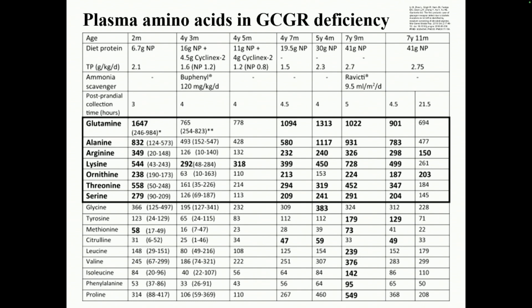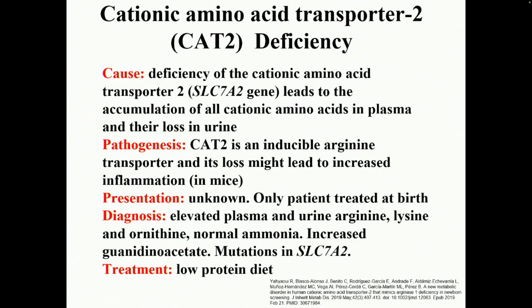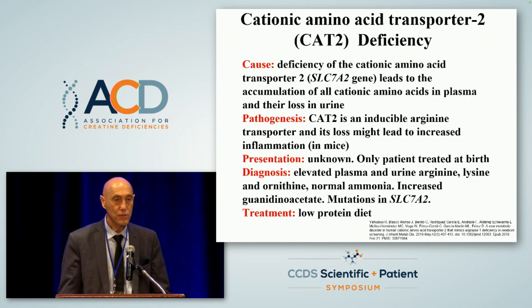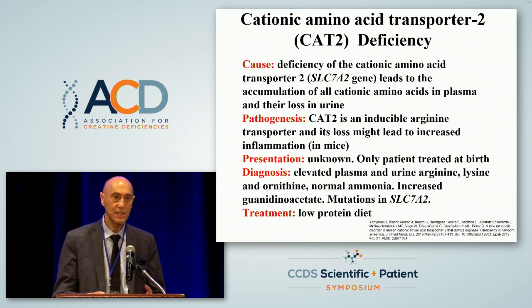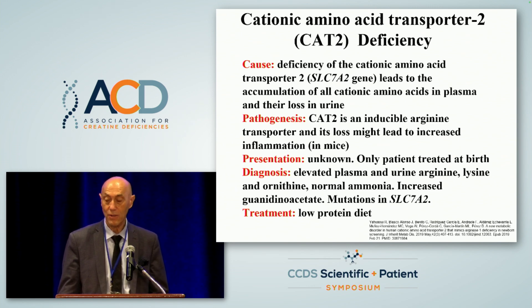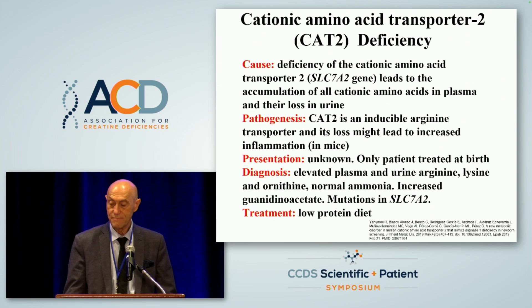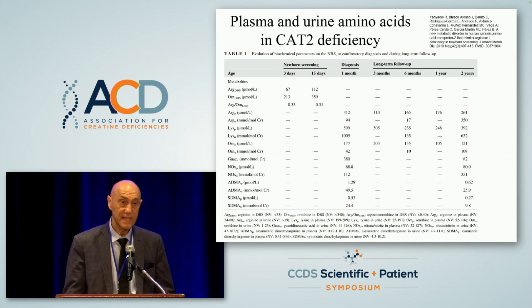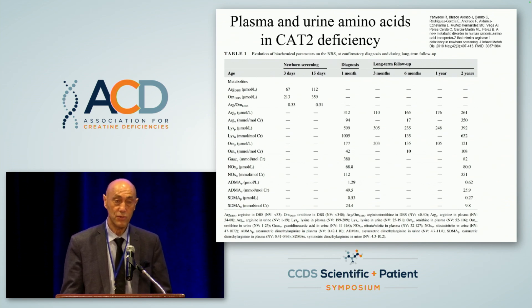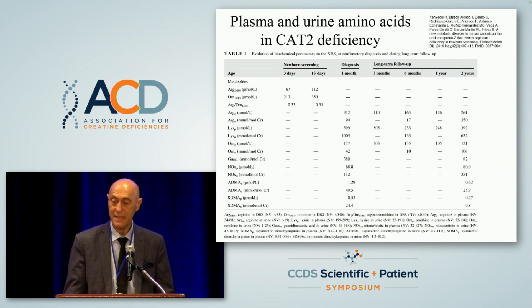The last addition to the group is deficiency of the cationic amino acid transporter, called CAT2. This is extremely rare. In this condition, you are unable to move arginine from outside to inside the cell and vice versa; as a result, arginine accumulates in plasma and leads to increased synthesis of guanidino acetate. A slide shows elevated guanidino acetate levels in the urine of patients with CAT2 deficiency; plasma was not tested in this patient.